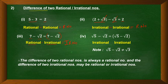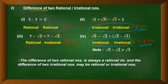For irrational minus irrational: root 5 minus root 2 is irrational. So when subtracting two irrational numbers, we could get a rational number in one case and an irrational number in another. Therefore, the difference of two rational numbers is always rational, but the difference of two irrational numbers may be rational or irrational.